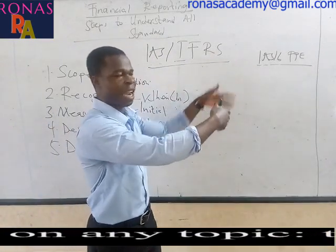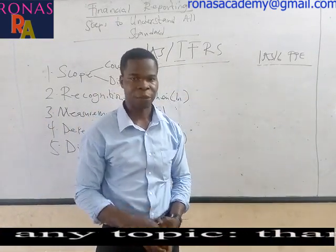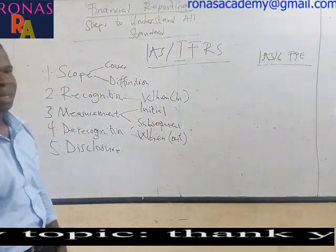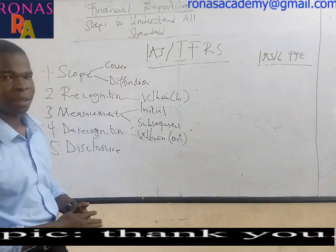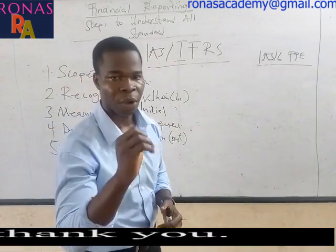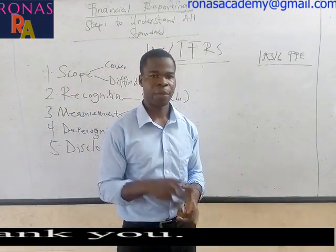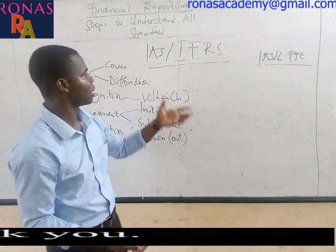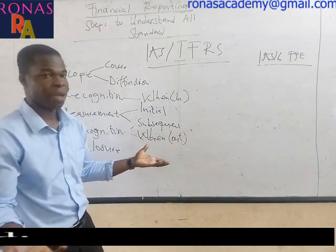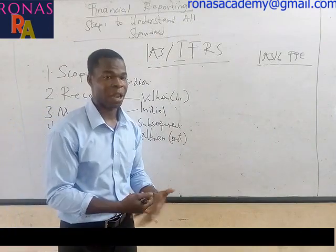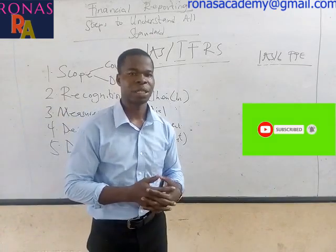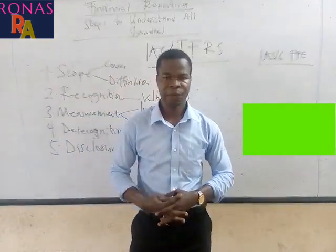If you take any accounting standard, make sure you pass it through these five key steps — scope, recognition, measurement, derecognition, and disclosure — and you will understand the concepts and be able to solve practical examples. Note that some standards may not follow these steps chronologically and may omit a particular step, but these are general steps that can help you understand all accounting standards. See you in our next video.